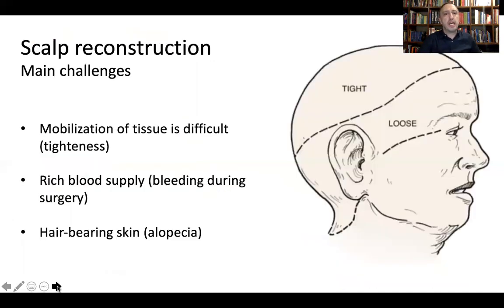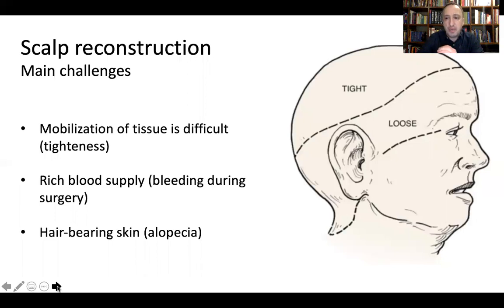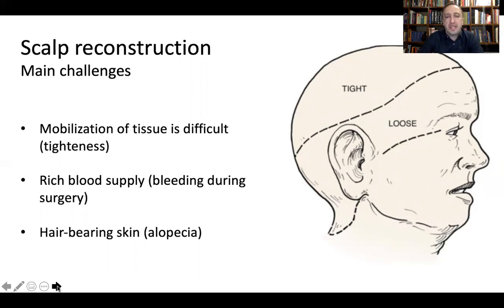This is the scalp. We can observe the thickness of the scalp in the zone where the galea is — the frontal, parietal, and occipital area covered by the galea. In that area, mobilization of tissue is very difficult. We can also observe the rich blood supply that causes bleeding during surgery, mainly when undermining below the skin. If we undermine below the galea, the loose areolar tissue covering the pericranium is almost avascular and produces no bleeding. The hair-bearing skin should be preserved to avoid definitive alopecia.